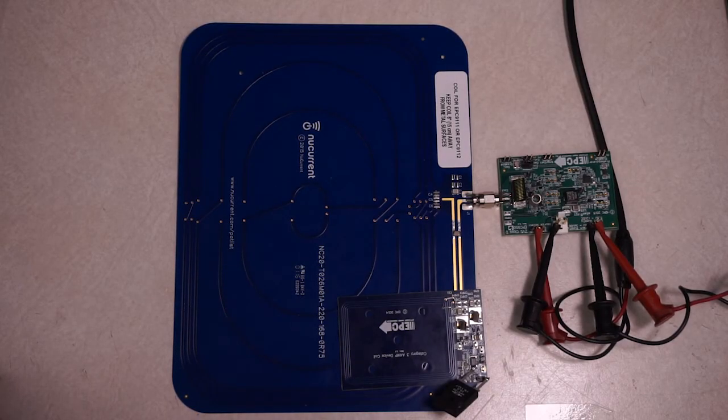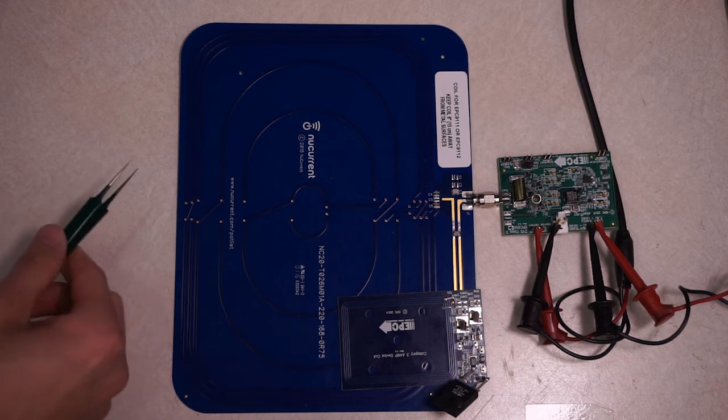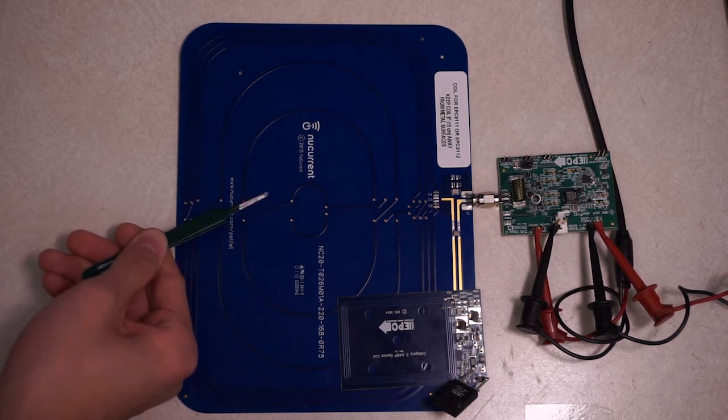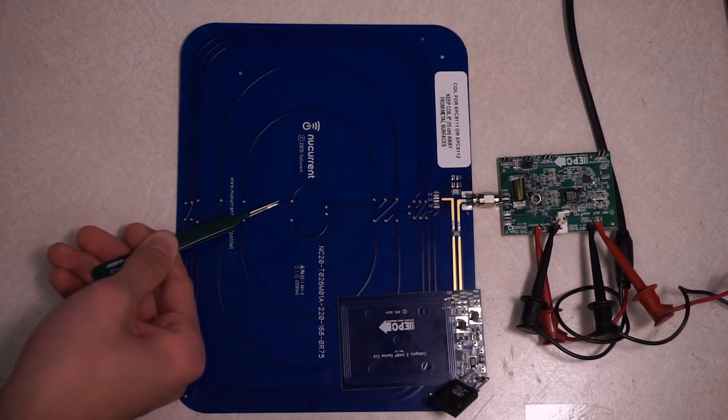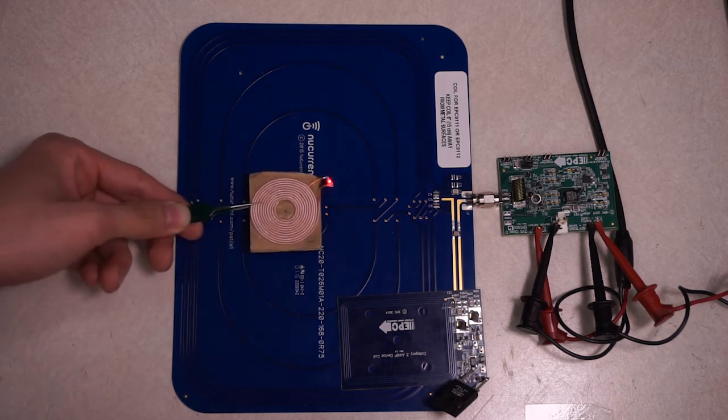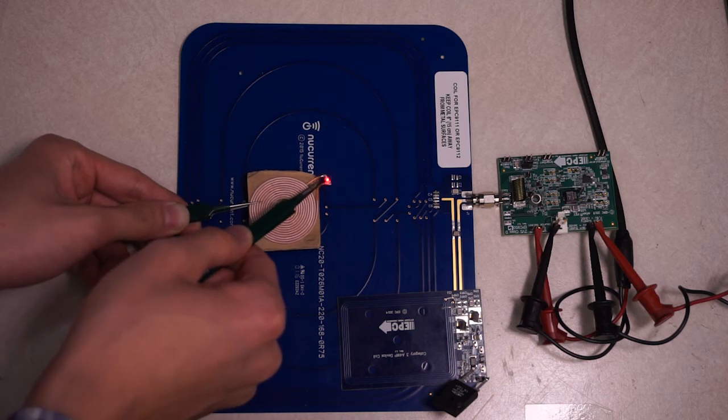To verify our concept, several experiments is conducted here. At first, this is an example wireless charging pad. In the market, there is no doubt it can charge the receiver coil in this direction. You can see here the LED lighted on.